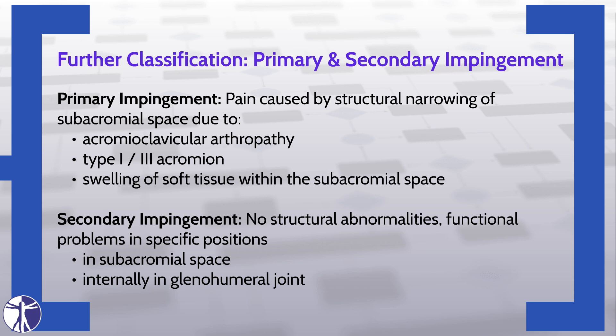Apart from the distinction based on the site of encroachment, shoulder impingement is further classified based on the cause of the problem, dividing it into primary and secondary impingement. In primary impingement, the source of pain and dysfunction is a structural narrowing of the subacromial space occurring due to acromioclavicular arthropathy, a type 1 or type 3 acromion — which is a flat acromion lacking natural curvature or a hooked acromion respectively — or due to swelling of soft tissue within the subacromial space. In secondary impingement, there are no structural abnormalities causing the dysfunction, but rather functional problems occurring in specific positions. It may occur in the subacromial space as well as internally in the glenohumeral joint.